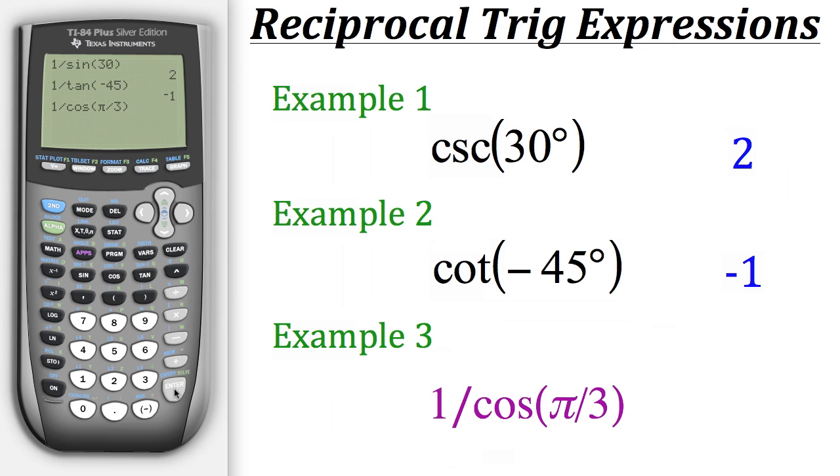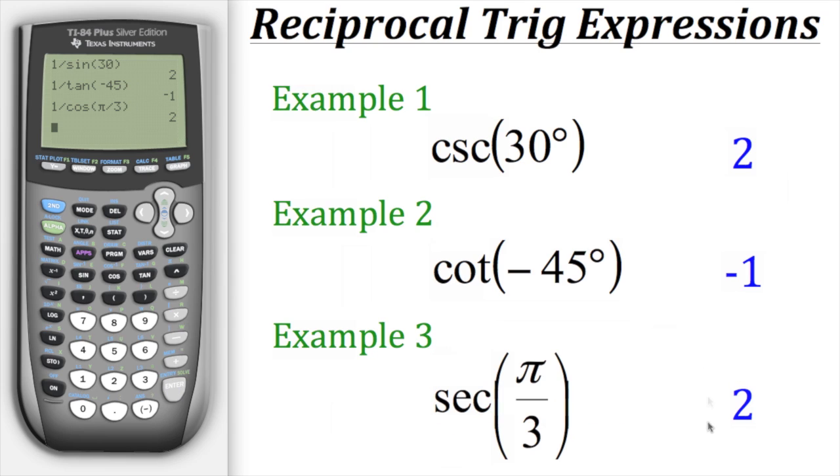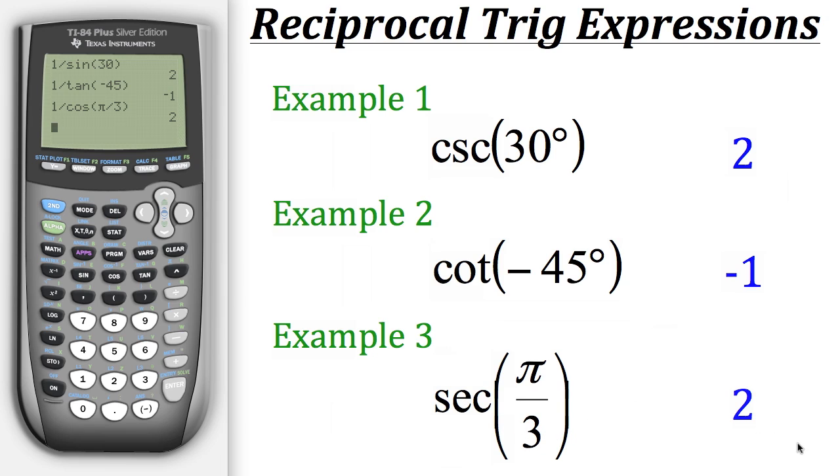Now we could hit enter, and when we do that we get a result of 2, which means that the secant of pi over 3 is also equal to 2. And that's how you evaluate reciprocal trig expressions using a calculator.